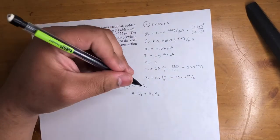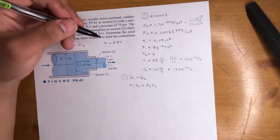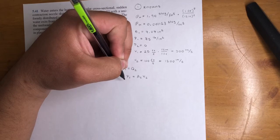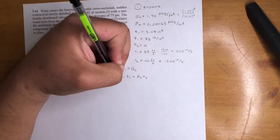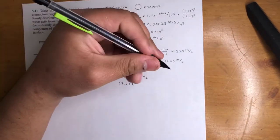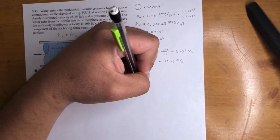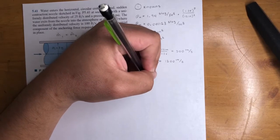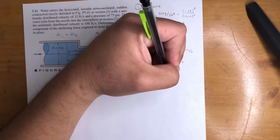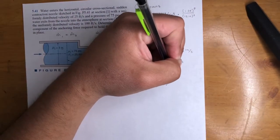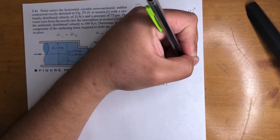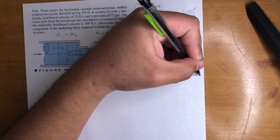So we could go ahead and get the area for the second point right there. That's going to be A1, 7.07, just plugging in the numbers, times 300 inch per second is equal to A2 times 1200. If you do that, I'm going to go ahead and put it right here. A2 is equal to 1.768 inch squared.